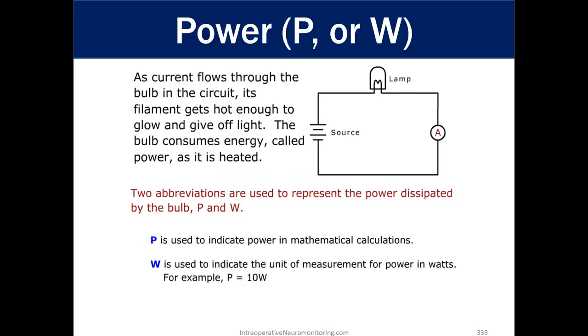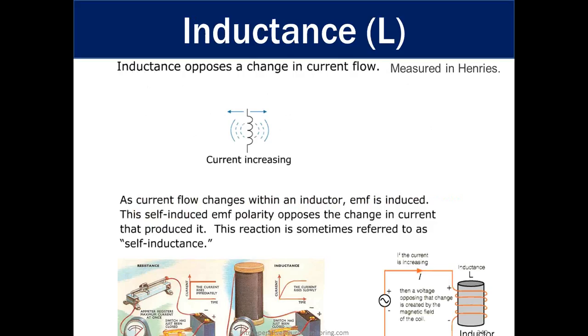Power. As current flows through the bulb in a circuit, its filament gets hot enough to glow and gives off light. The bulb consumes energy called power as it is heated. Two abbreviations are used to represent power dissipated by the bulb, which is P and W. P is indicate the power of the mathematical calculation, where W is used to indicate the unit of measurement for the power in watts. For example, power equals 10 watts.